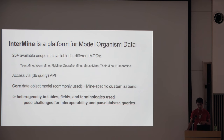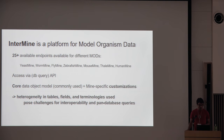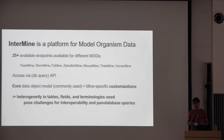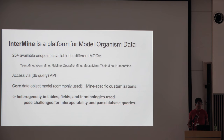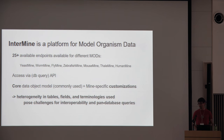Intermine is a platform for model organism data. There are currently about 25 different instances of Intermine spanning all kinds of organisms. Access is primarily through a database query API, although there is a web interface and tools to help create queries. There's a core data object model consisting of a few tables, and then there are mine-specific customizations. These customizations are really where the model starts to fall apart — there's no consistency across the mines, so you lose any potential for interoperability.